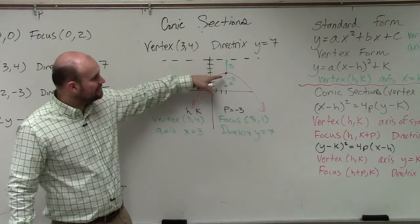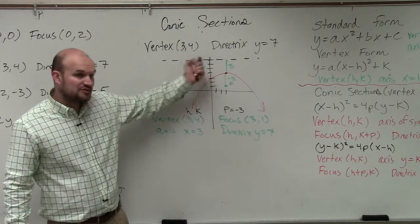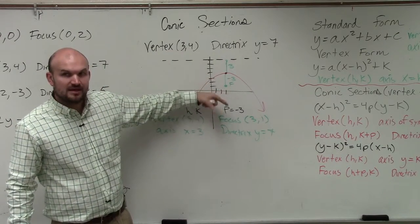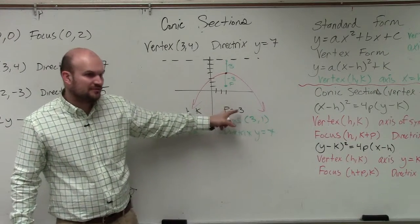In reality, p, I should have explained this a little bit clearer, p is actually the distance. The actual value of p is the distance from the vertex to the focus. While as that same distance is equal back to the directrix. But p, in this case, is going to be negative 3.